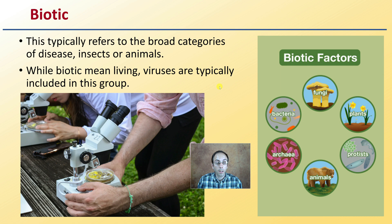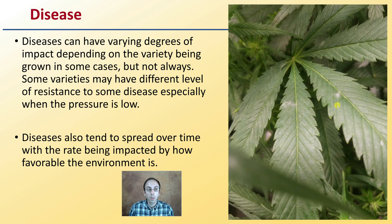Disease is probably the most obvious category most people go to. Here we see some powdery mildew getting started. Diseases can have varying degrees of impact depending on the variety being grown. Some varieties may have different levels of resistance to certain diseases, especially when pressure is low or when it initially comes in. Diseases also tend to spread over time, with the rate being impacted by how favorable the environment is for that particular disease.